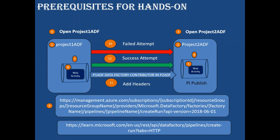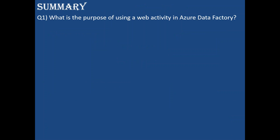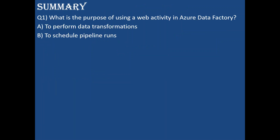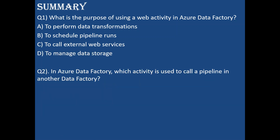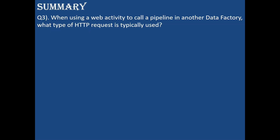Now let's go through the quiz questions. Q1: What is the purpose of using web activity in Azure Data Factory? Answer C is correct: to call external web services. Q2: Which activity is used to call a pipeline in another data factory? Answer C: web activity. Q3: When using a web activity to call a pipeline in another data factory, what HTTP method is used? Answer B: POST.